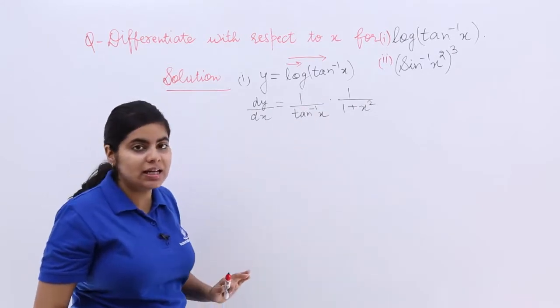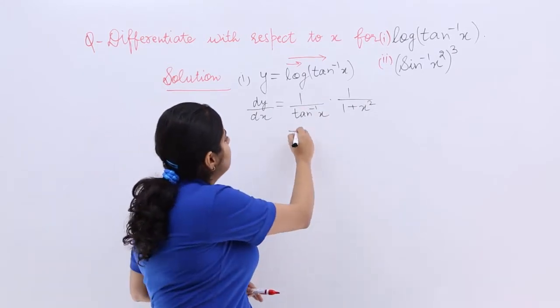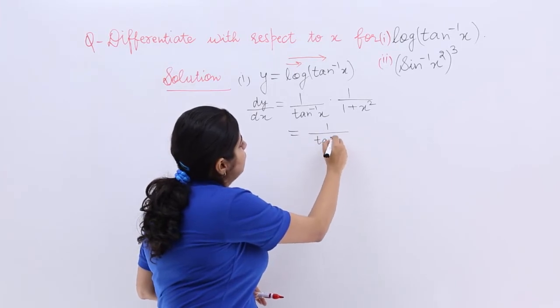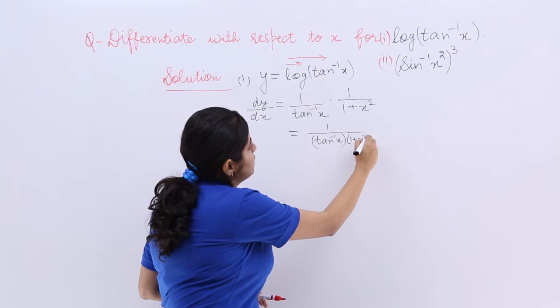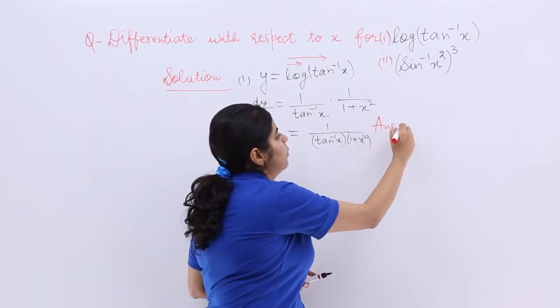So that means this is the answer. We can write it in a proper manner. It should be 1 upon tan inverse x multiplied by 1 plus x square. So this is the answer to this numerical problem number 1.